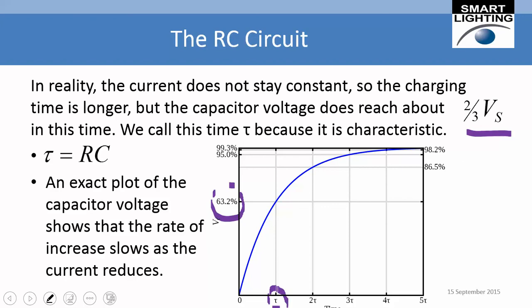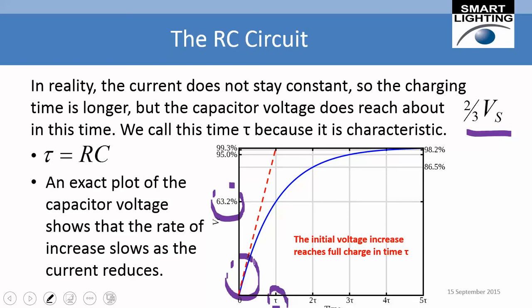The actual charging curve starts out rising quickly but eventually slows down because of the growing voltage across the capacitor. The initial rate of increase, if maintained, would follow the dashed red line and reach full charge at t equals tau. The actual curve is tangent to that line at the start, follows it closely for about half of tau, then begins to diverge, charging more and more slowly.